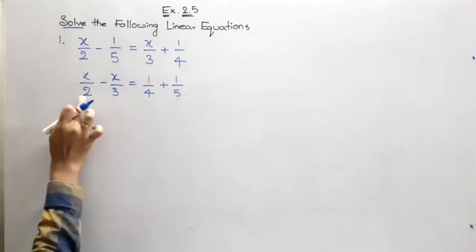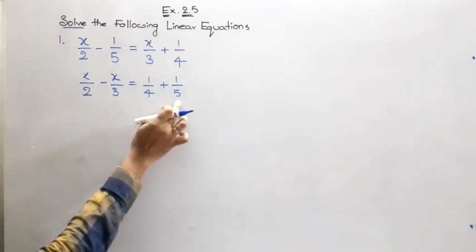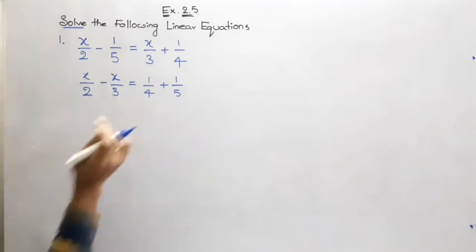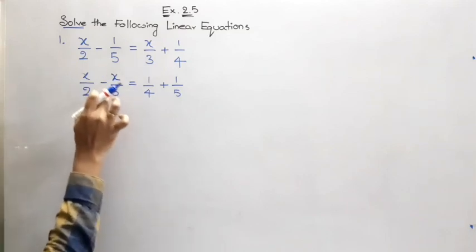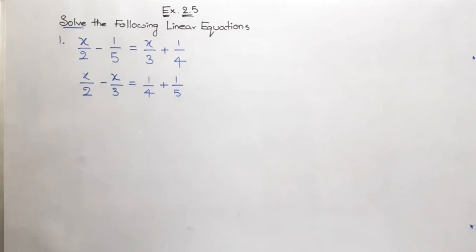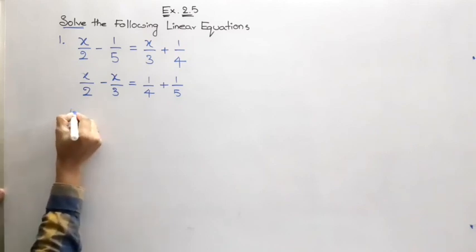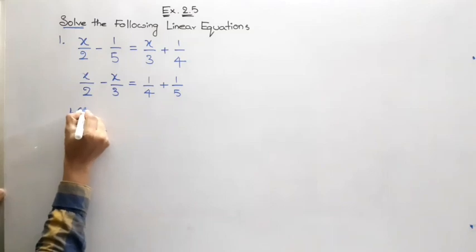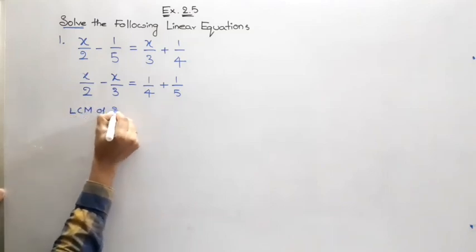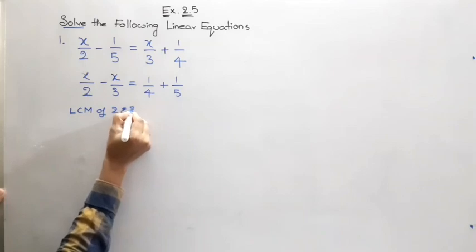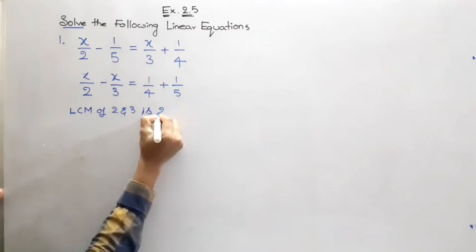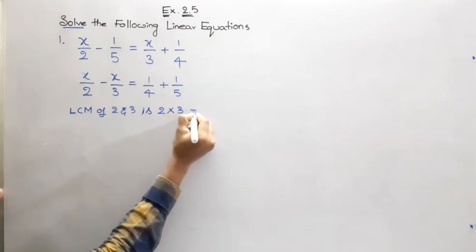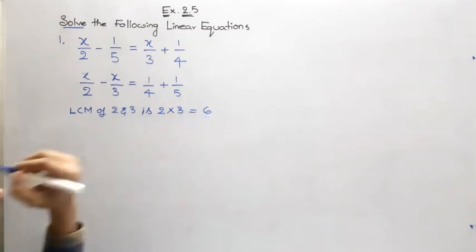x by 2 minus x by 3 is equal to 1 by 4 plus 1 by 5. Now look at the denominators of the terms, they are different. Here also the denominators are different. So we can go with LCM. Here the LCM of 2 and 3—being prime numbers, we can take the multiplication of those numbers, so 2 into 3 is 6.